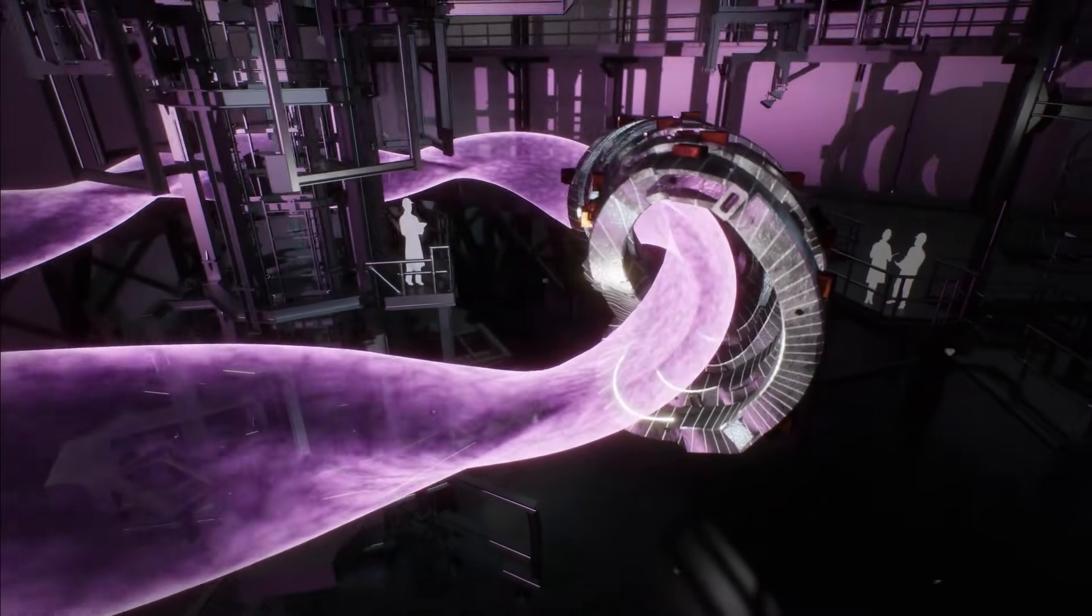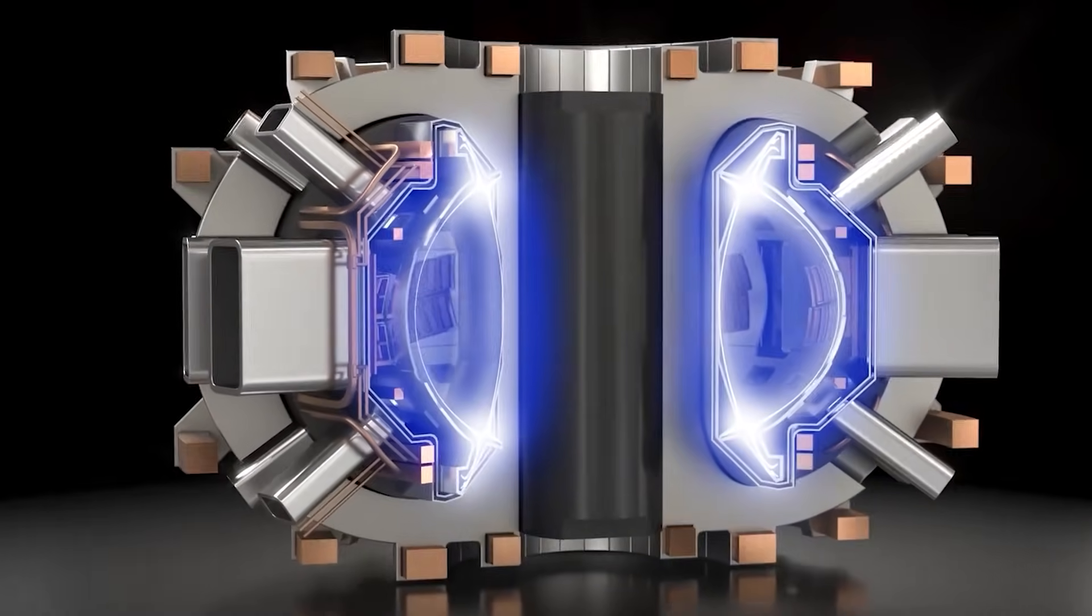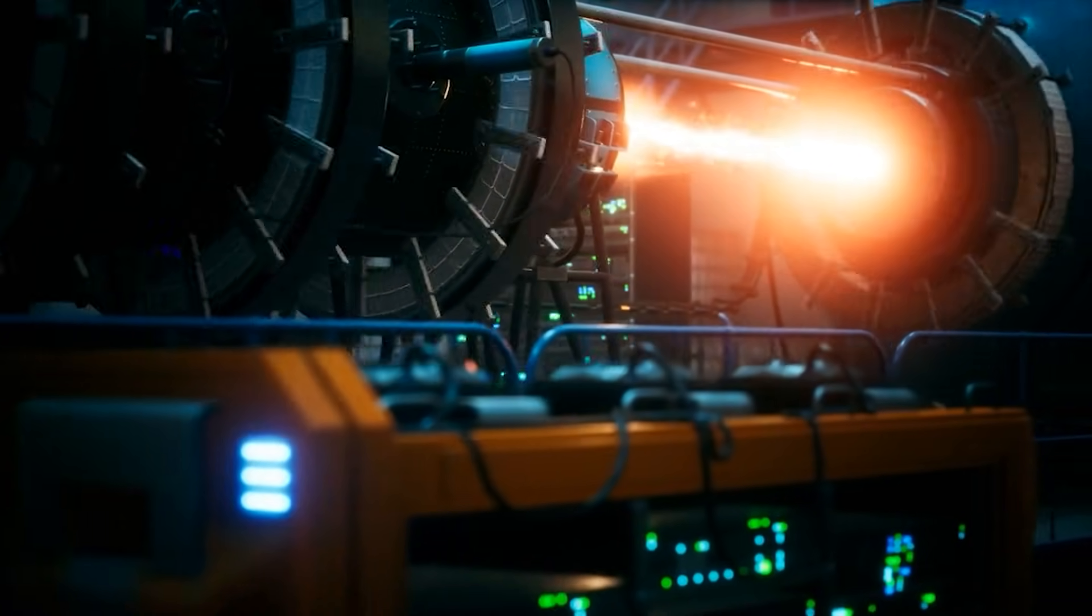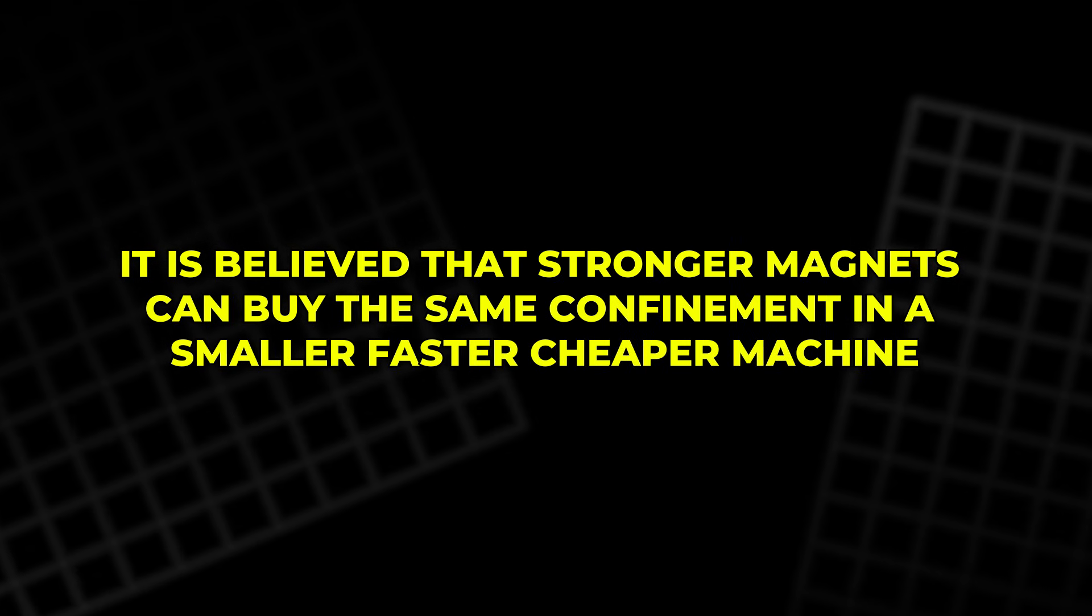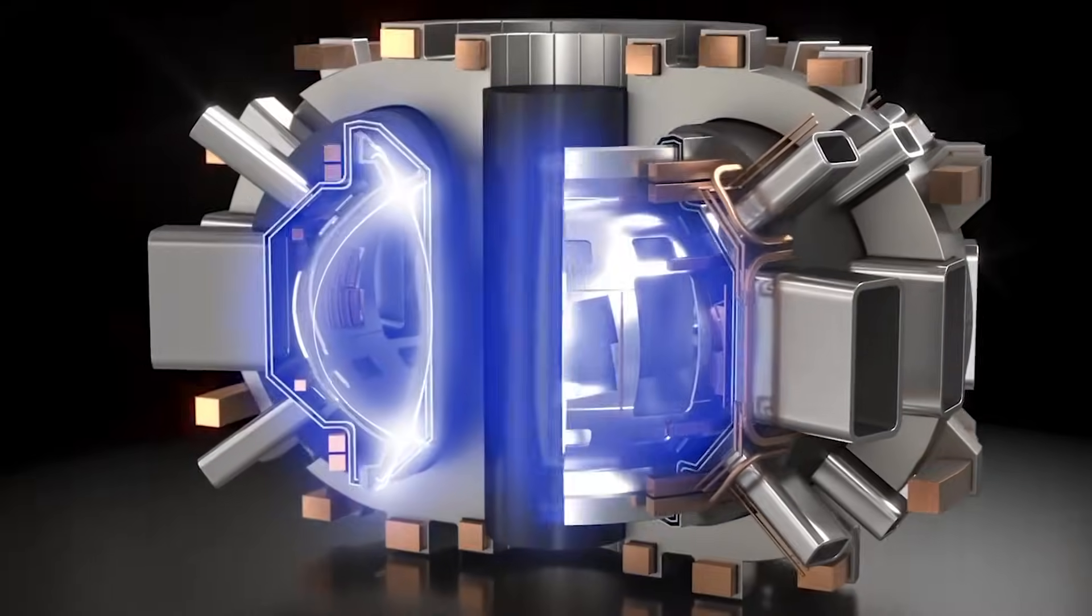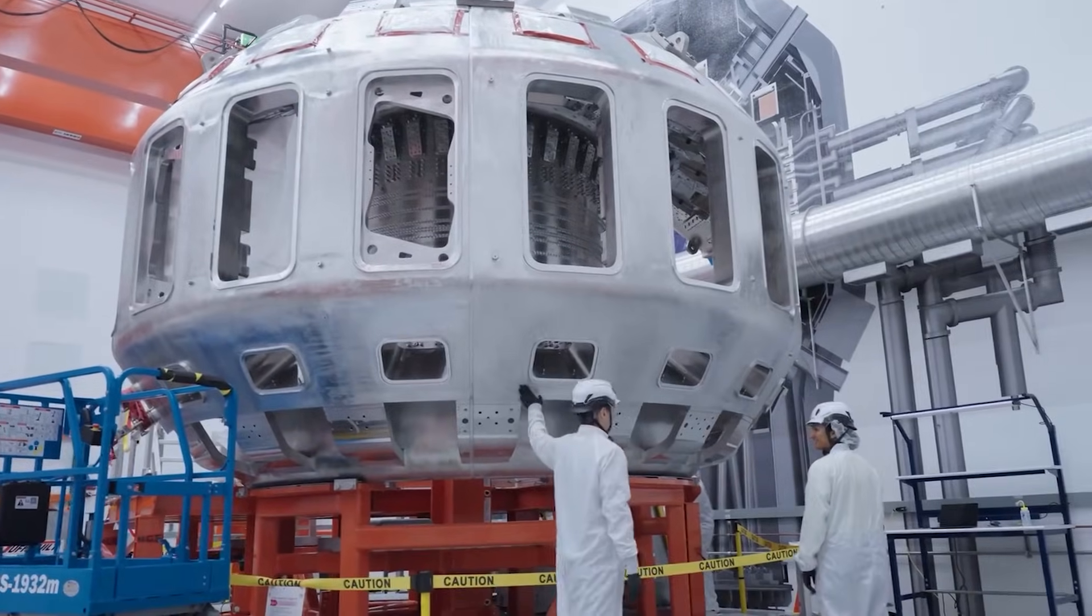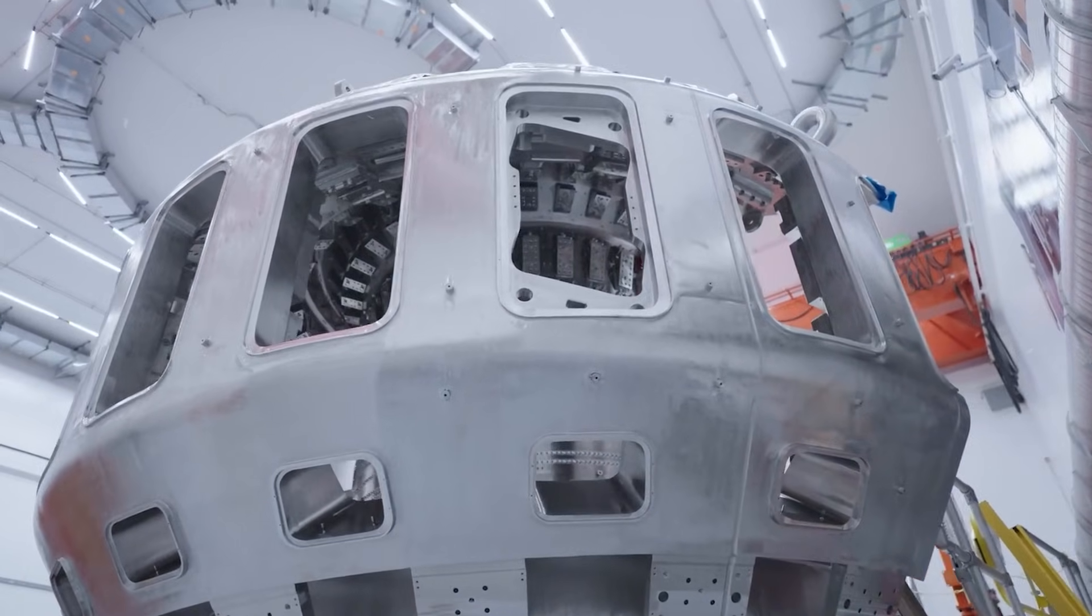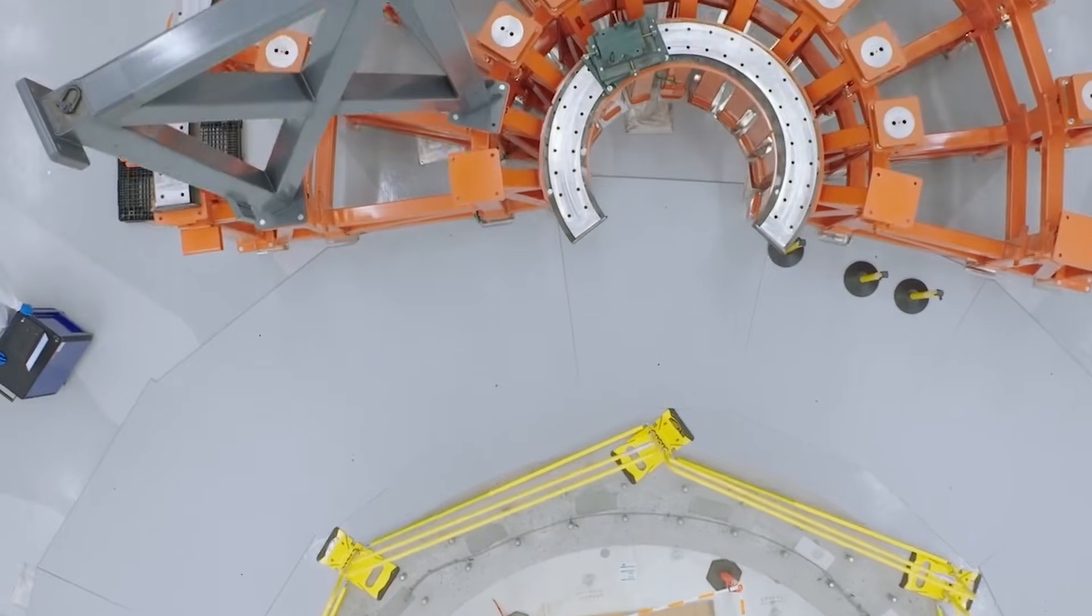Fusion has always been a fight between elegant equations and stubborn hardware. For decades, the safest plan was to scale up and hope the plasma stayed calm long enough. Spark flips that logic. It believes stronger magnets can buy the same confinement in a smaller, faster, cheaper machine. The bet might fail, and the obstacles are real: heat, neutrons, fuel, and control. But it's a bet that gets tested soon, not in 30 years. If the cage holds, the fusion story turns from promise to progress. And if it doesn't, the lessons still push every reactor that follows.